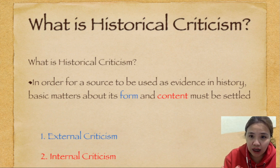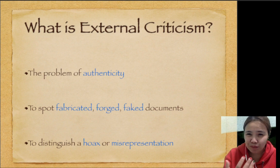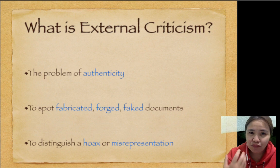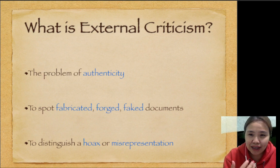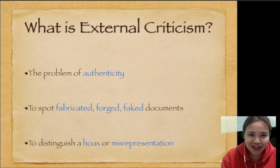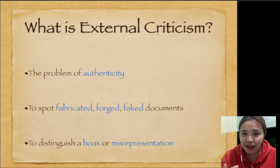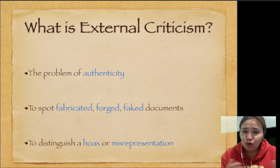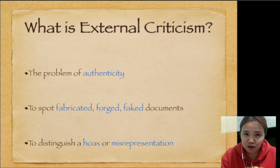Sa pag-aaralan natin ng dalawang steps ng historical criticism: one, external criticism — na it talks about the form, and internal criticism — when it talks about the content. External criticism is the first one to conduct before internal criticism. From the term itself, external — yung panlabas. In external criticism, it talks about its authenticity — the problem of authenticity or the question of authenticity. Kailangan natin malaman kung itong dokumento, kung itong teksto na nakukuha natin, ito ba ay tunay, siyang tunay, o siyang totoo. The objectives of external criticism is to spot fabricated, forged, fake documents — hindi totoo, hindi tunay na mga dokumento o teksto. At pangalawa, to distinguish hoax or misrepresentation.